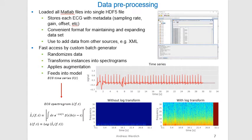For data preprocessing, all MATLAB files were loaded into a single HDF5 file. The advantage is that we can store each ECG with its corresponding metadata, such as sampling rate, gain, and offset, and we can also expand and maintain the data. We could add data from other sources, for example from ECG machines that use the XML format. The data can then be accessed easily by the custom batch generator, which I will describe in a few minutes.